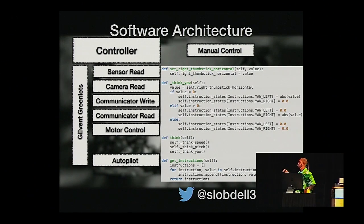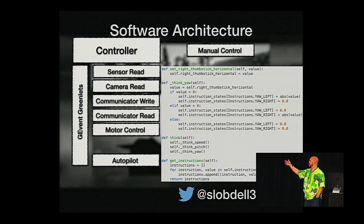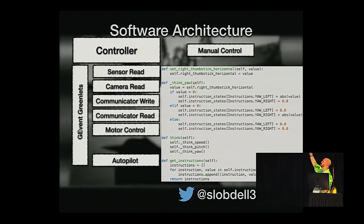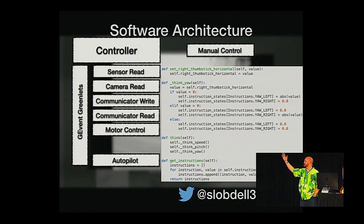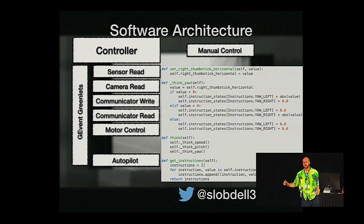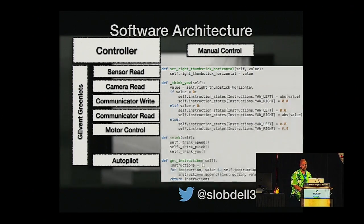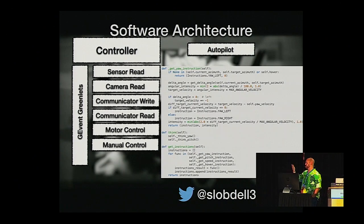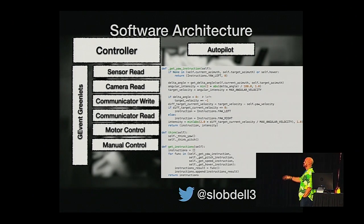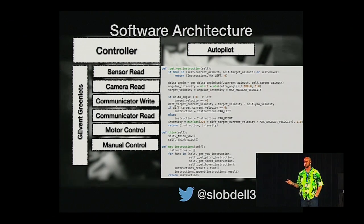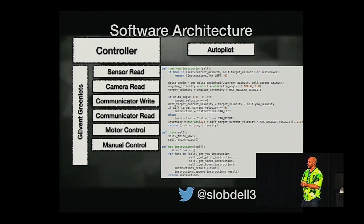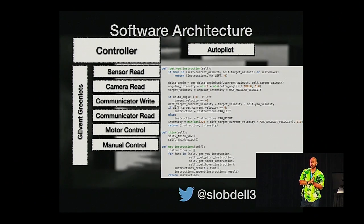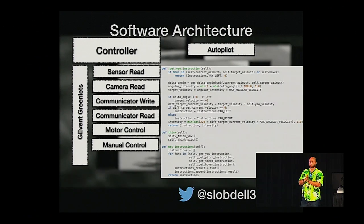Here's some sample code from the manual control. The two public functions are think and get_instructions. It's updated via set_right_thumbstick_horizontal, for instance — as you send a command it updates what values it's supposed to do. For the autopilot it's the same pattern, just updated from sensors. This is the sample code for yaw: calculating yawing left or right and the associated intensity based on the current azimuth and the target azimuth.